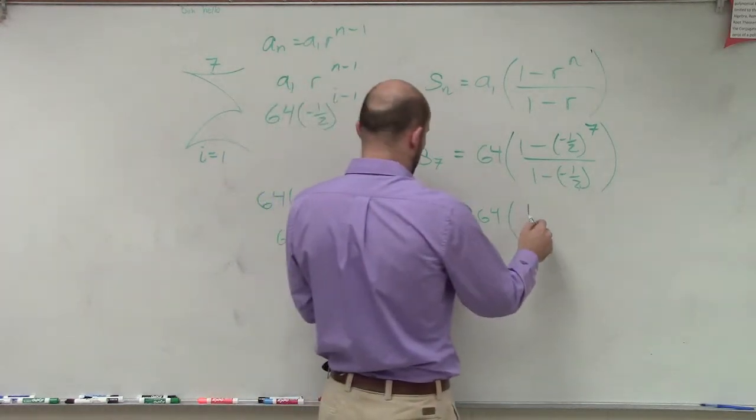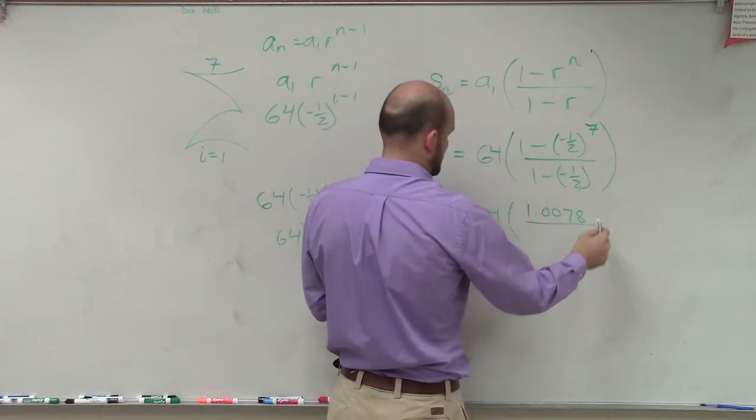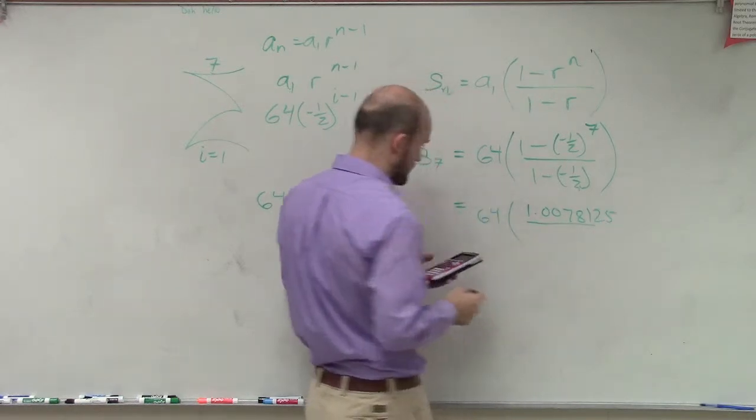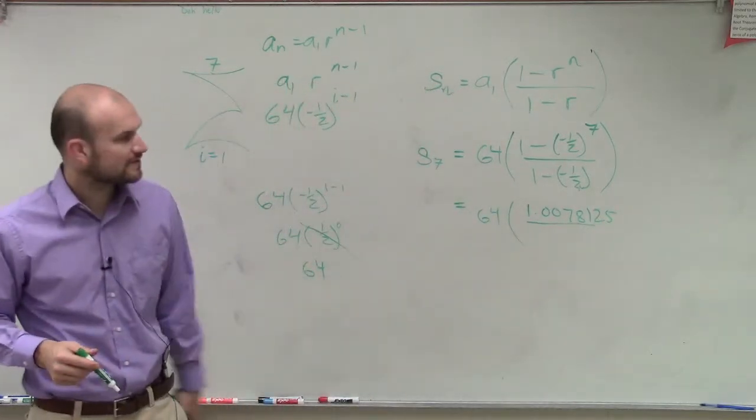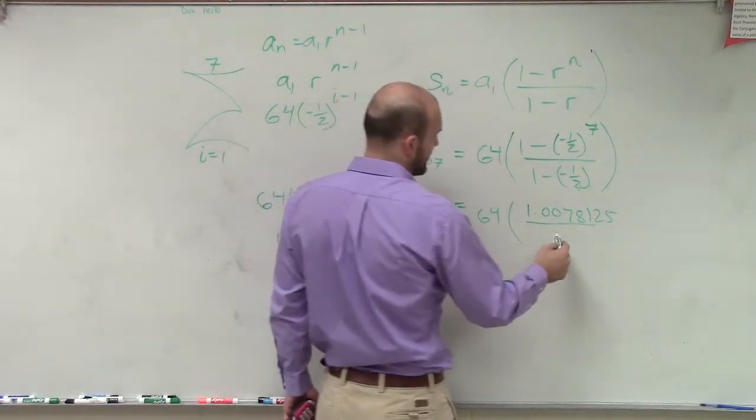So on top, we have 1.0078125. And then 1 minus negative 1 half is going to be 3 halves, or you could say 1.5.